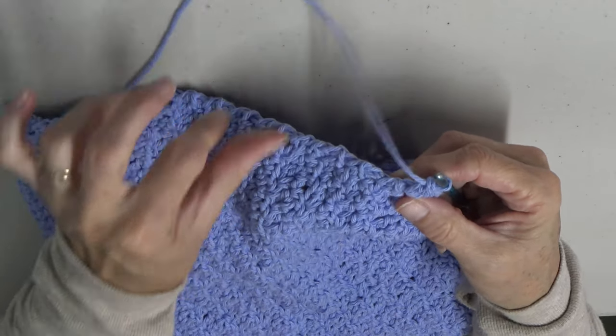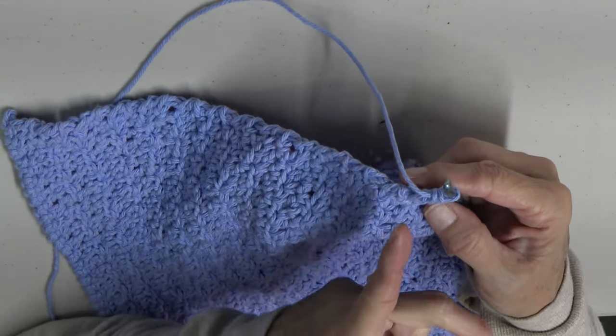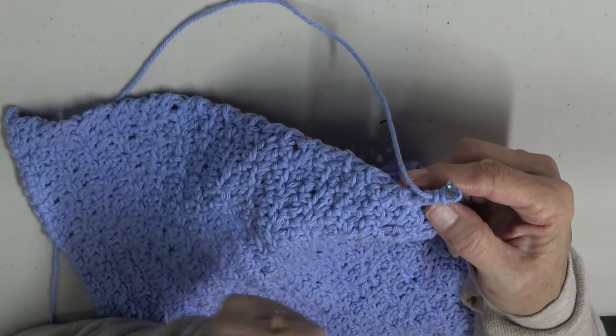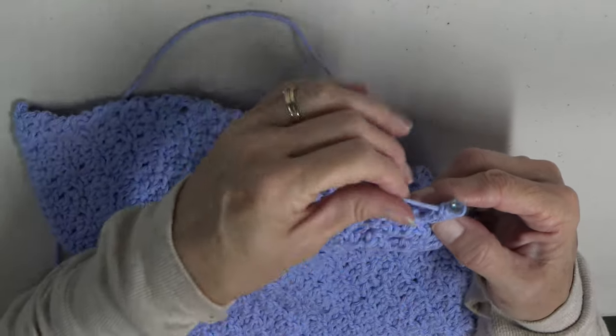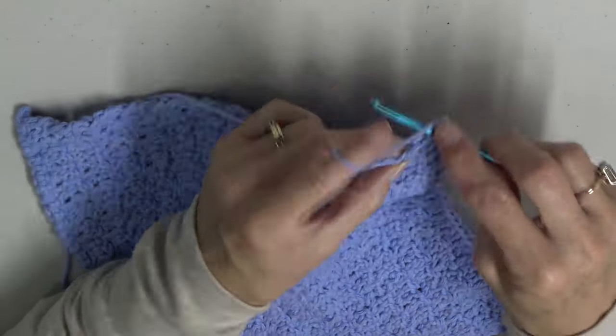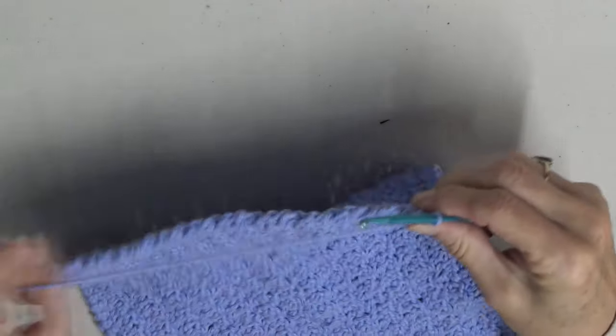And then you turn and you put a double crochet in each row all the way down the side. When you get to the corner, again, you put three double crochets in each corner. But when you're going down the side, you just put a double crochet in the end of each row.